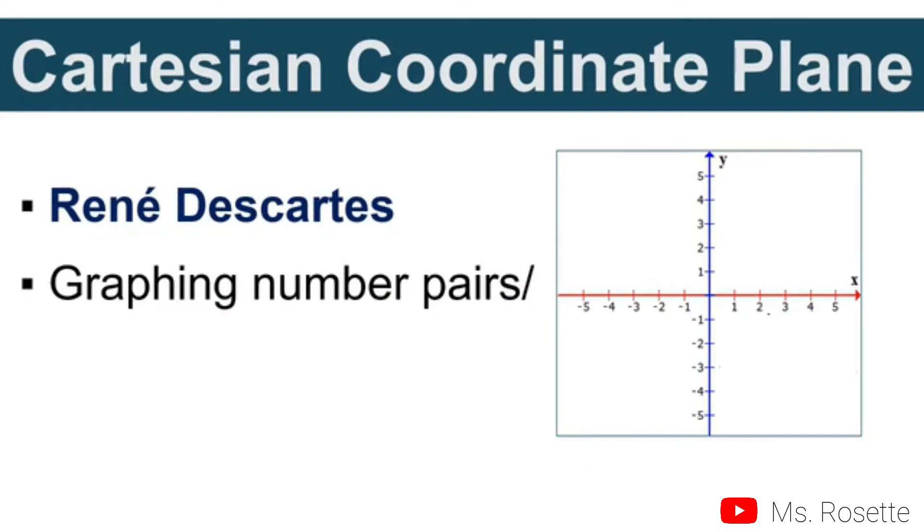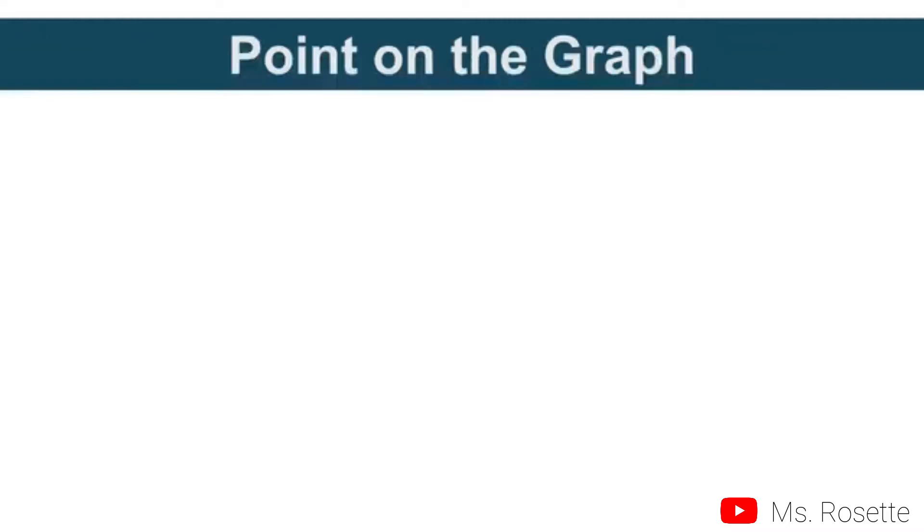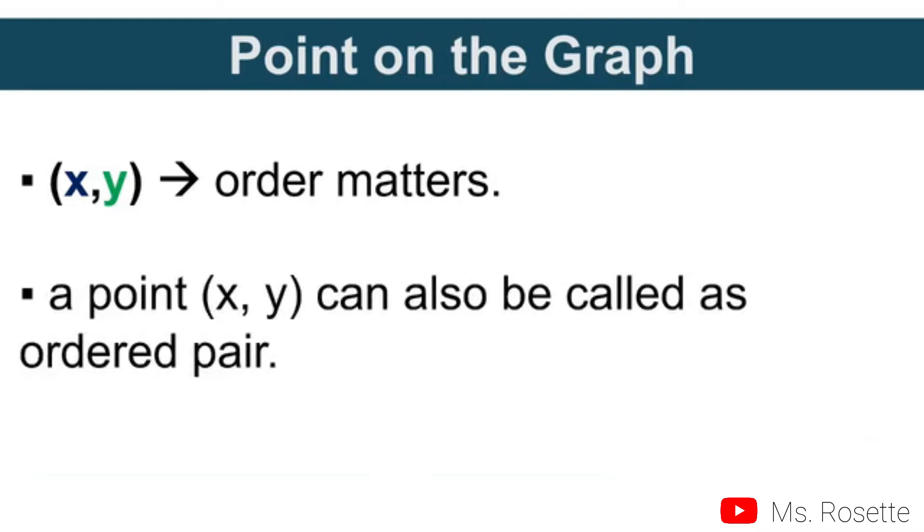It is a system for graphing number pairs, which we also call a point. A point in a plane or graph contains two components where order matters. It comes in the form of (x,y), where x comes first and y comes second. We call this point an ordered pair.